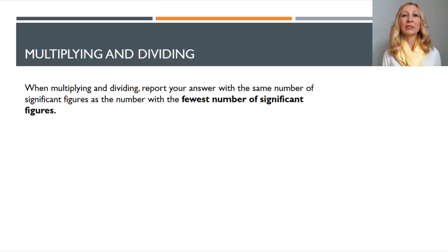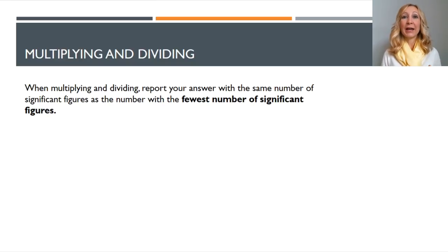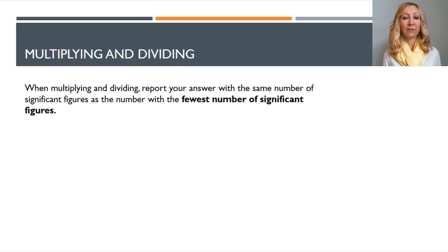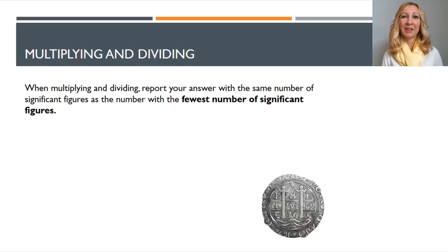Now, what do you do if you're multiplying and dividing? This is where you have to know how to count significant figures. When you're multiplying and dividing, you need to report your answer with the same number of significant figures as the number with the fewest number of significant figures. We're going to go through and do a practice problem with this.